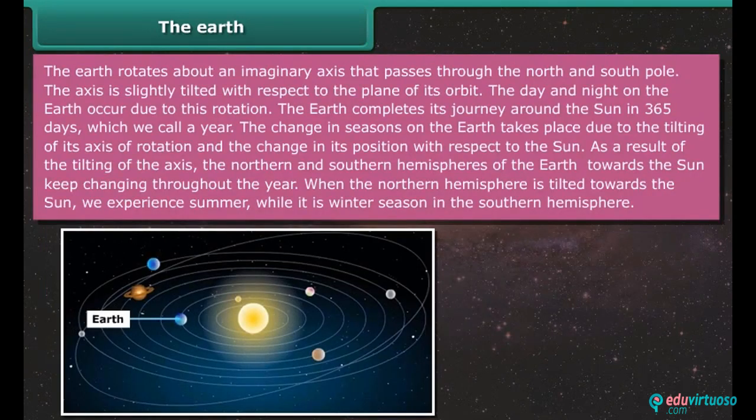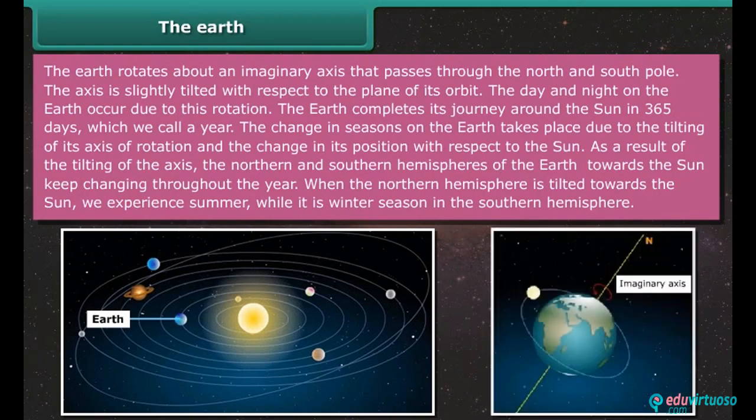The earth rotates about an imaginary axis that passes through the north and south pole. The axis is slightly tilted with respect to the plane of its orbit. The day and night on the earth occur due to this rotation. The earth completes its journey around the sun in 365 days, which we call a year. The change in seasons on the earth takes place due to the tilting of its axis of rotation and the change in its position with respect to the sun. As a result of the tilting of the axis, the northern and southern hemispheres of the earth towards the sun keep changing throughout the year. When the northern hemisphere is tilted towards the sun, we experience summer, while it is winter season in the southern hemisphere.